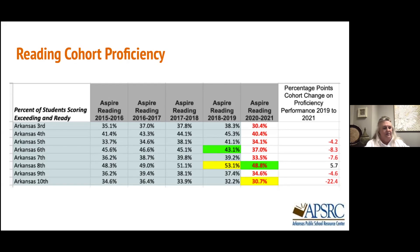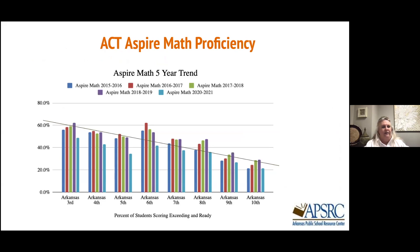Now let's take a look at math performance. At any point in time, feel free to ask questions as we move on. This is math performance across the years with the gap year not represented, but five years of trend data across the state in math for grade levels three through ten going across the bottom. Just like in reading, the data appears to show the greatest decreases in state math performance to be at grades three and five. Do you notice when you look at this graph any additional differing trends in grade level performance when you examine math?